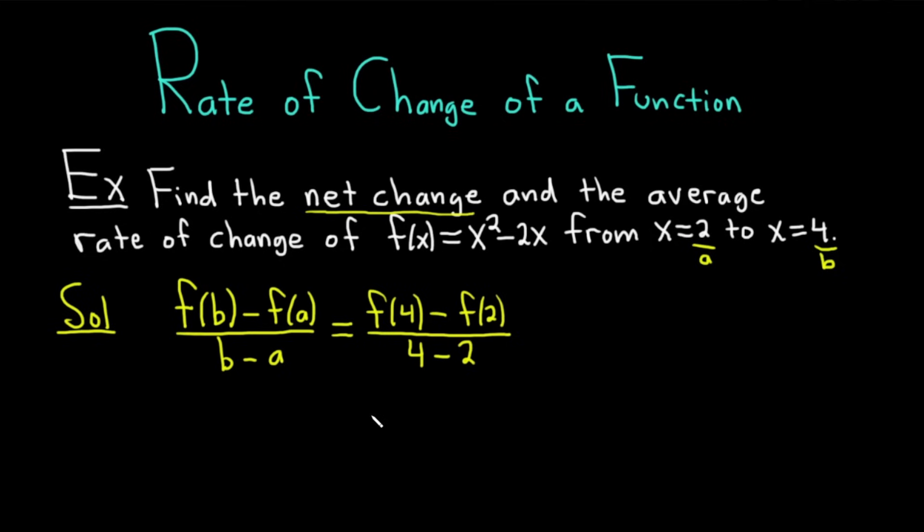Now it's going to get a little bit messy so let's be careful here. So this is equal to, I'll write it right below so it'll be easier to understand. Plugging in 4 for x, so f(4), we're going to get 4² - 2(4).